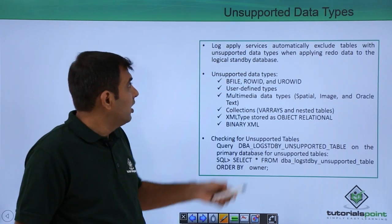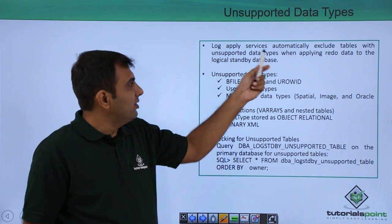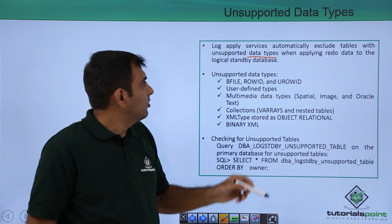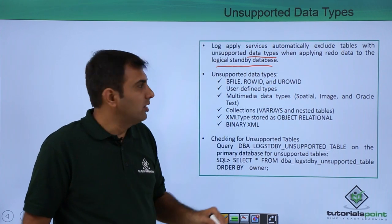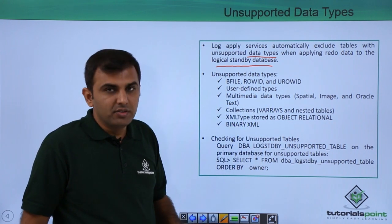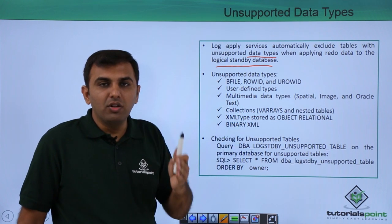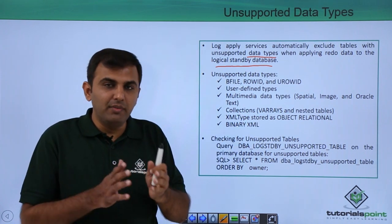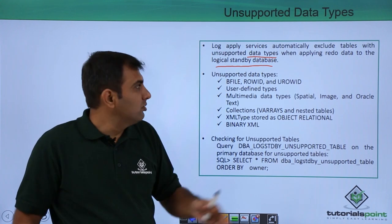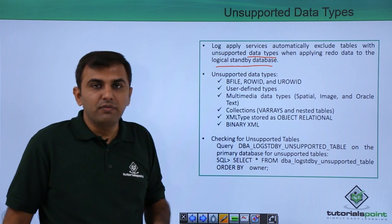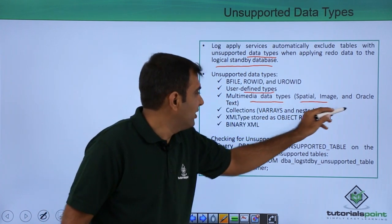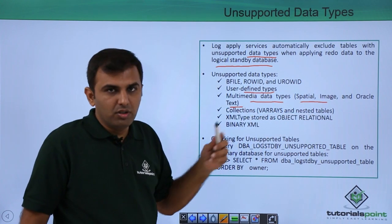Next, unsupported data types. The log apply service automatically excludes tables with unsupported data types when applying redo to the logical standby database. Unsupported data types include BFILE, ROWID, and UROWID. These data types may exist on the primary, but when applying to the logical standby, those specific tables are excluded. Also unsupported are user-defined data types and multimedia data types like Oracle Spatial, Oracle Text.